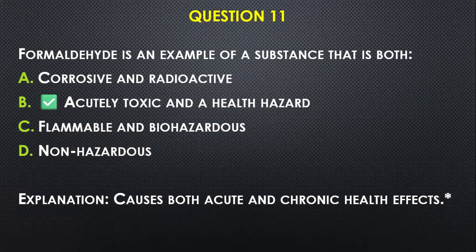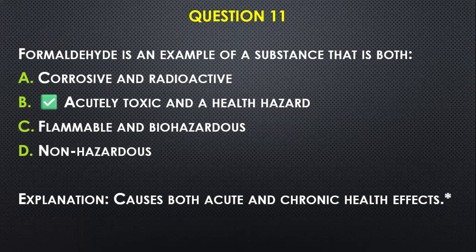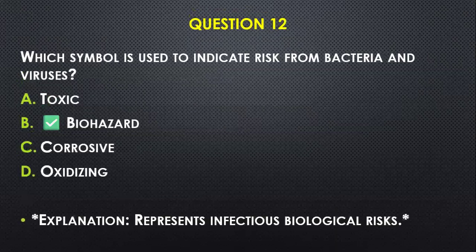Question number eleven: Formaldehyde is an example of a substance that is — A) corrosive and radioactive, B) acutely toxic and a health hazard, C) flammable and biohazardous, D) non-hazardous. I will go with B, because formaldehyde, apart from being a health hazard, is also acutely toxic — it causes both acute and chronic health effects.